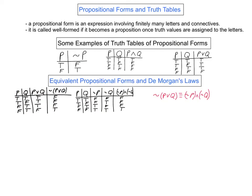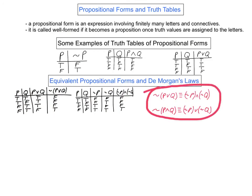The second DeMorgan's Law is similar, and it states that the negation of the statement that both P and Q are true is the statement that at least one of P or Q is not true. The proof is obtained in a similar way: we would put the conjunction of P and Q here instead of the disjunction, follow through on the calculation of the last column, and for the right-hand side we would use the disjunction rather than the conjunction.